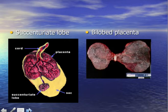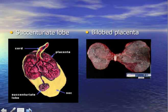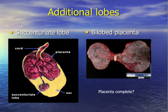Another variation is the so-called bi-lobed placenta, where the placenta has two lobes — one lobe here and another lobe there — with a broader connection and blood vessels in the connecting bridge. In these situations it's important that we check the placenta extra carefully for completeness. One can imagine there could be a rupture when delivering the placenta in the third stage of labour.